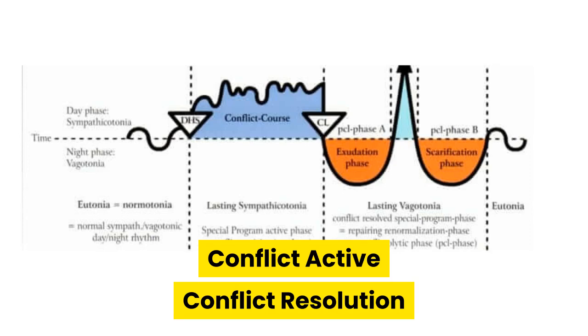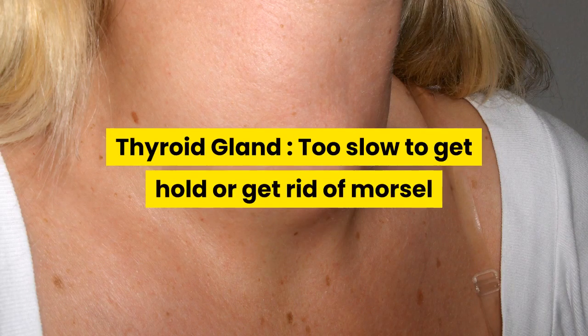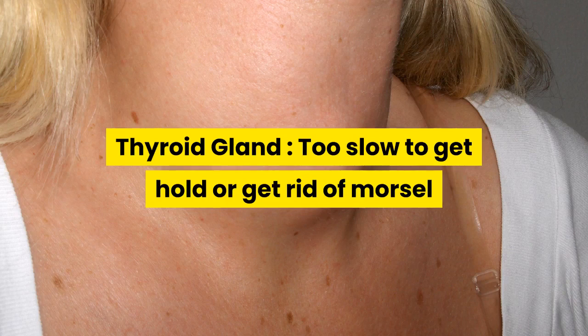If I interpret his research correctly, there are two phases of a disease — like in Ayurveda, a hot phase and a cold phase. Hypothyroid is a conflict resolution phase; hyperthyroid is a conflict active phase. The conflict for the thyroid gland is the conflict of not being fast enough to grab a desired morsel because the individual is too slow, or the conflict of not being able to get rid of an undesired morsel because the individual is too slow.